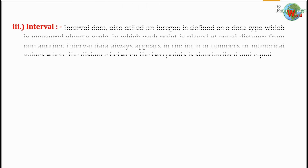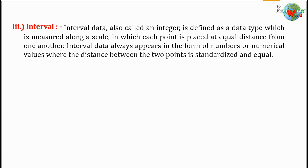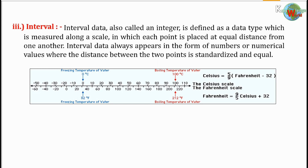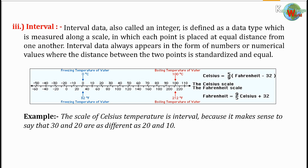Interval data, also called an integer, is defined as a data type which is measured along a scale in which each point is placed at equal distance from one another. Interval data always appears in the form of numbers or numerical values where the distance between the two points is standardized and equal. For example, the scale of Celsius temperature is interval, because it makes sense to say that 30 and 20 are as different as 20 and 10.